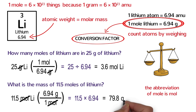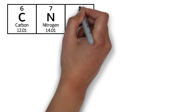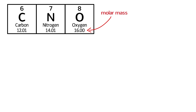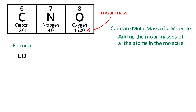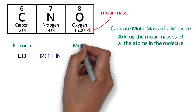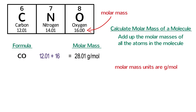That is how to convert between moles and grams for elements, but what about molecules and compounds? Let's start by looking at molecules made from carbon, nitrogen, and oxygen. The molar mass of each element is typically written on the bottom. In order to convert between grams and moles for a molecule, we need to calculate the molar mass of the molecule by adding up the molar masses of all the atoms in the molecule. Carbon monoxide has one carbon and one oxygen, so we add 12.01 for carbon and 16 for oxygen to get a molar mass of 28.01 grams per mole. Nitrogen is a diatomic element composed of N₂ molecules. Because there are two nitrogen atoms per molecule, we multiply 14.01 by 2, so the molar mass of N₂ is 28.02 grams per mole.